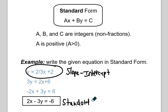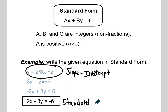Finally, we want the coefficient on X to be positive. So we multiply everything by negative 1 and that will change the signs, giving us 2X minus 3Y equals negative 6 in standard form. Both of these equations give you the same line — this is slope-intercept because you can see the slope of 2 thirds and the Y intercept of 2 easily when it's in this form.